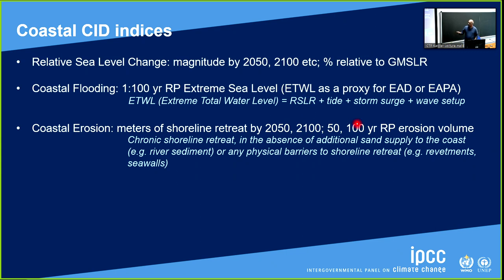In chapter 9, extreme total water level is defined as the addition of relative sea level change, tide, storm surge, and wave setup. Depending on which components are combined, there are different terms — for example, if you don't consider wave setup, it's called extreme still water level. In chapter 12 we used ETWL throughout. For coastal erosion, in decision-making or sectoral impacts, people commonly use meters of shoreline retreat projected by 2050 or 2100. For storm erosion, people use the 50-to-100-year return period erosion volume.